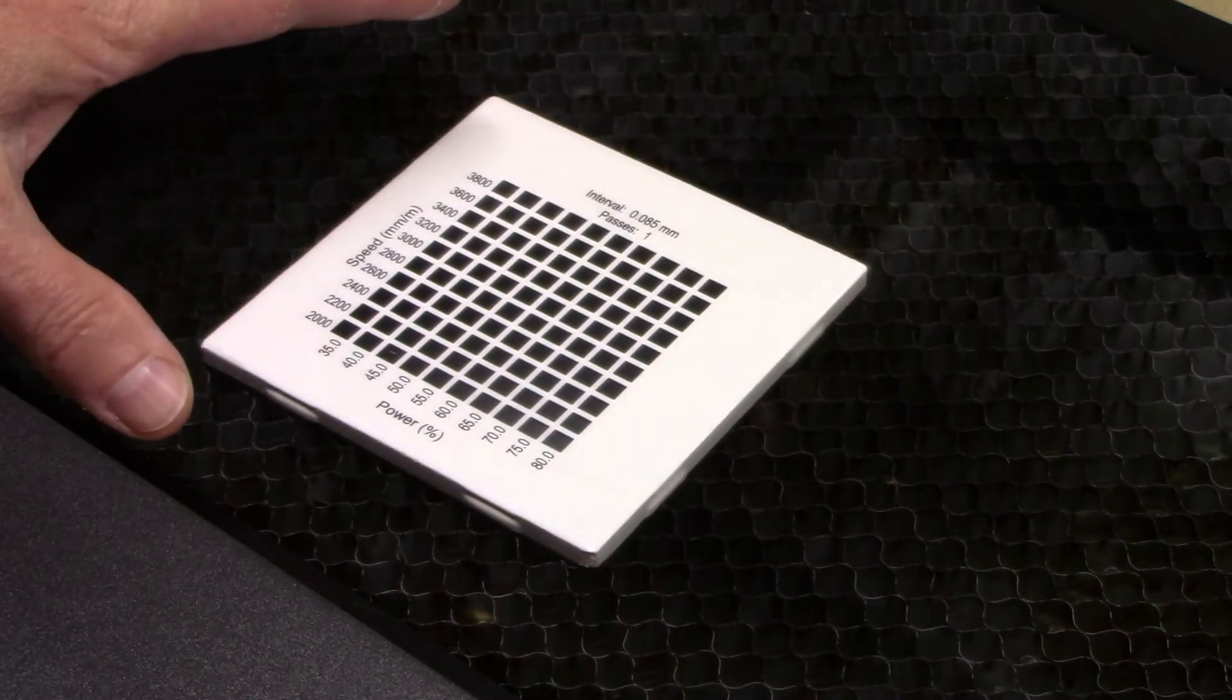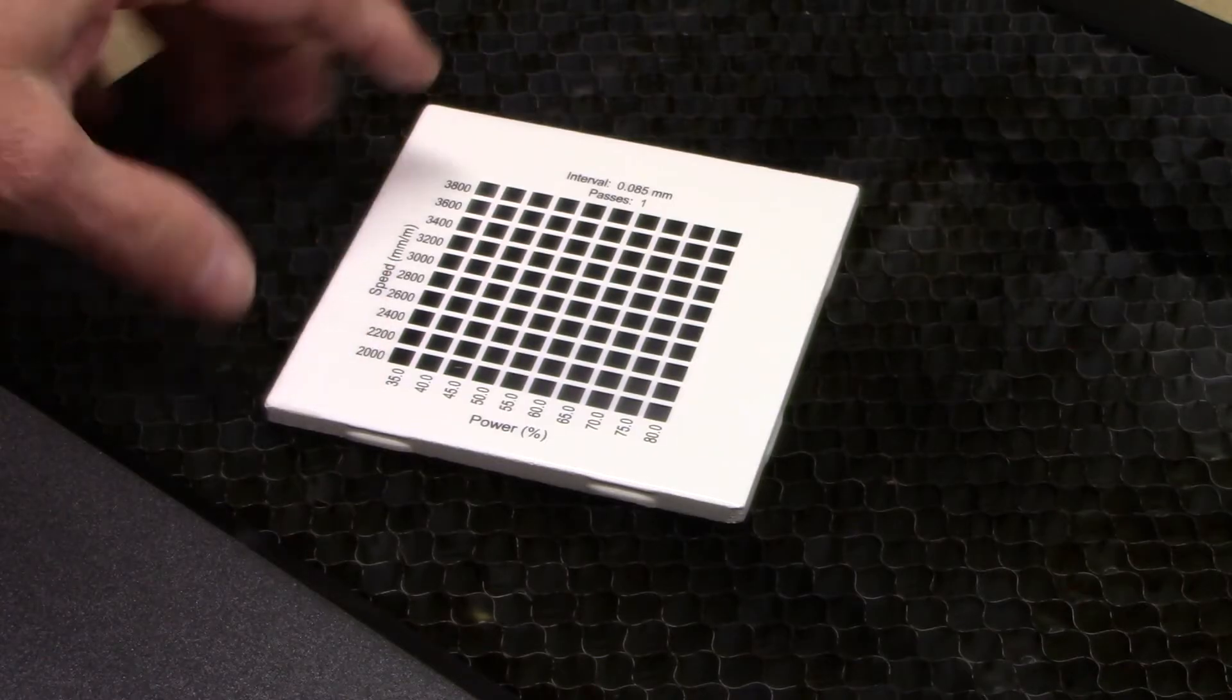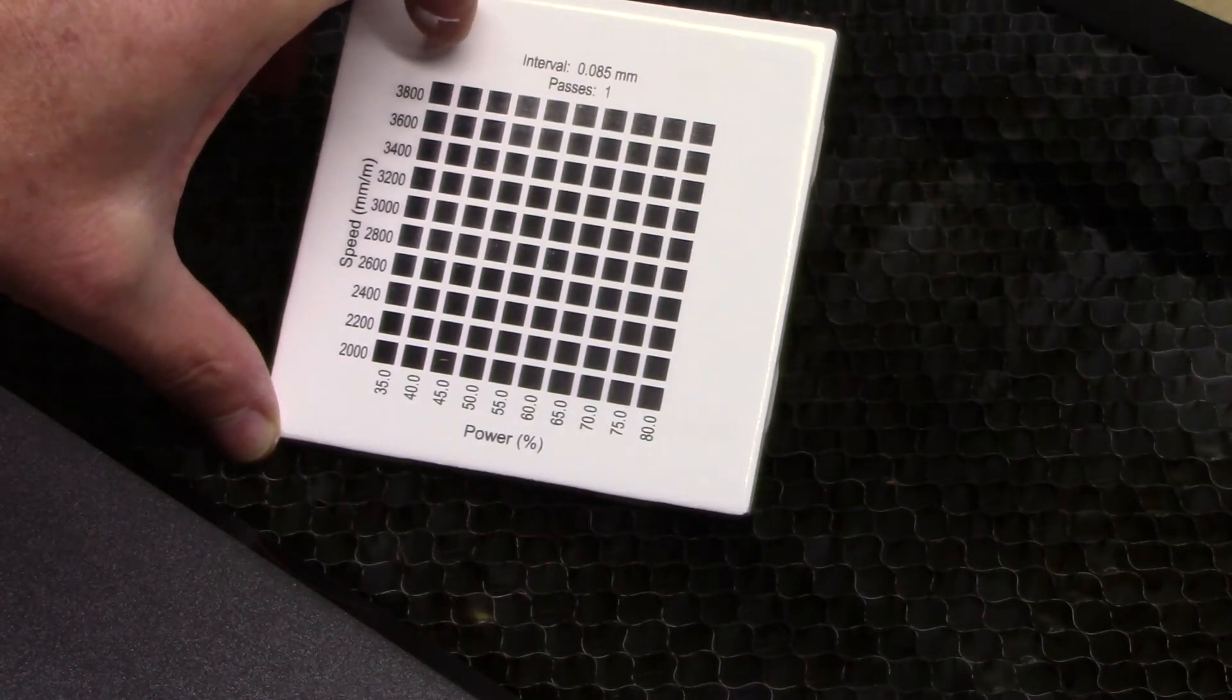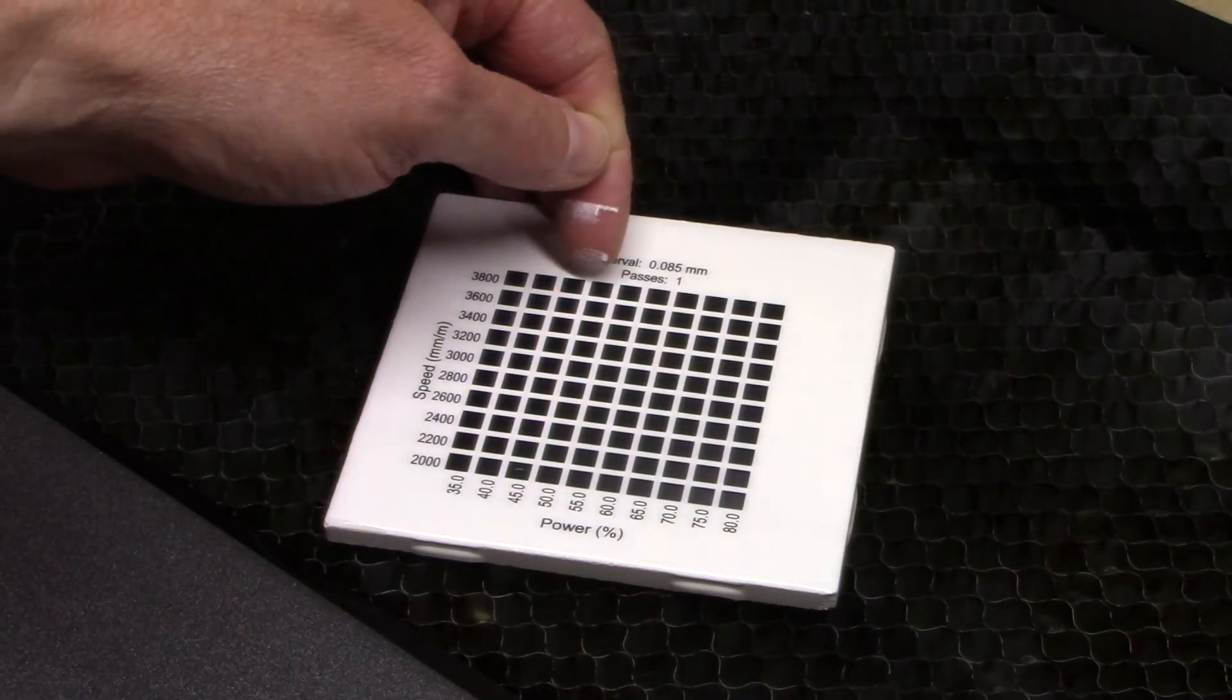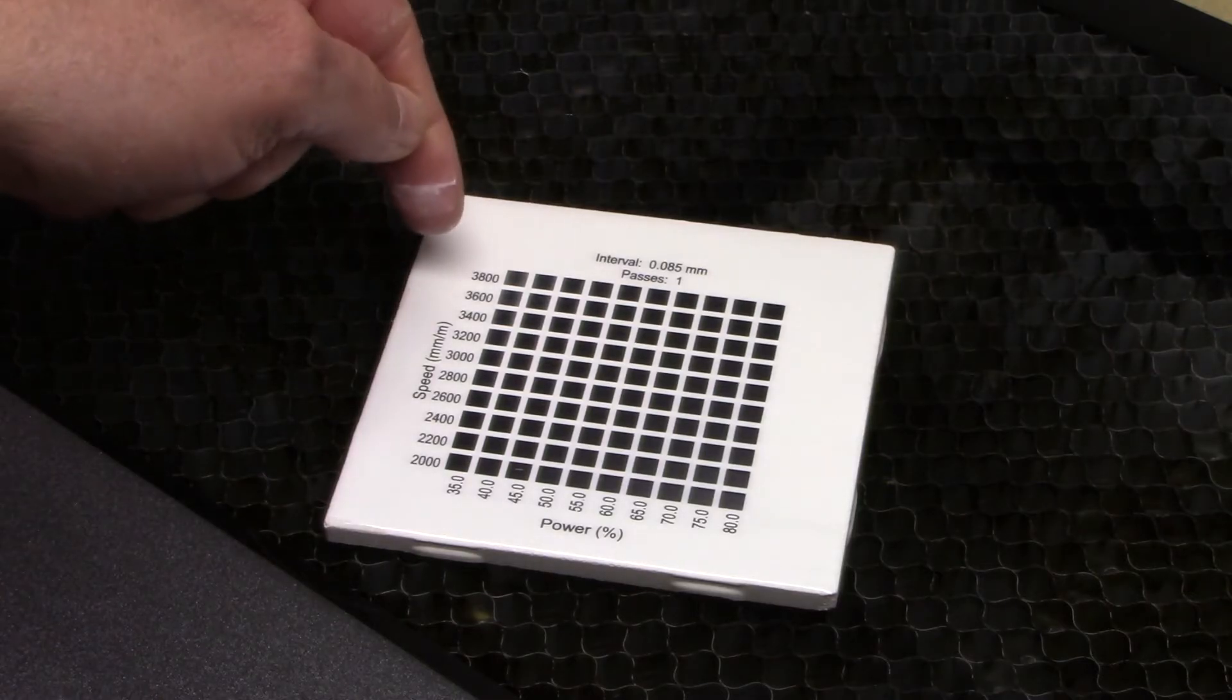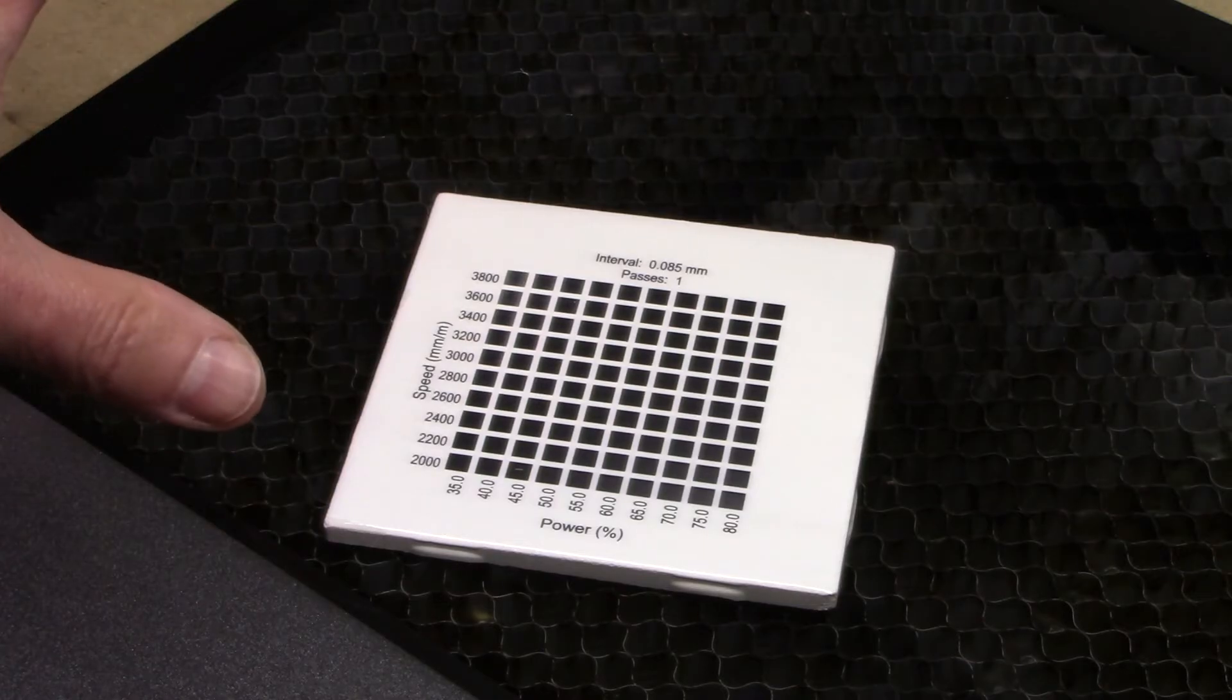I need to go get this cleaned up to see if this stuff actually stuck to the tile or not. But down here at 35 percent power at 2000 millimeters per minute, it's black. At 3800 millimeters per minute at 80 percent power, it's black. Even all the way down, it almost looks like when we get down to about 40 percent it's starting to not be consistent, but even at 50 percent power it's nice and black at 3800. This means if this stuff doesn't wash off, we can run tiles at 3800 millimeters per minute at 50 percent power and get a nice black finish.